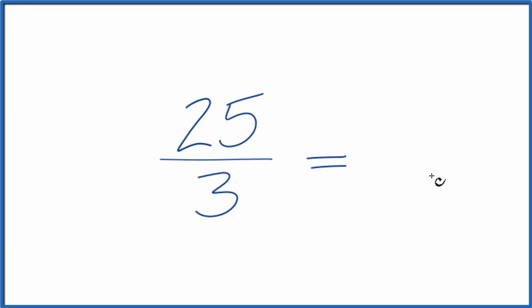To do that, we need to find a common factor, something that goes evenly into 25 and 3. The thing is, the only number that goes into both 25 and 3 is 1.